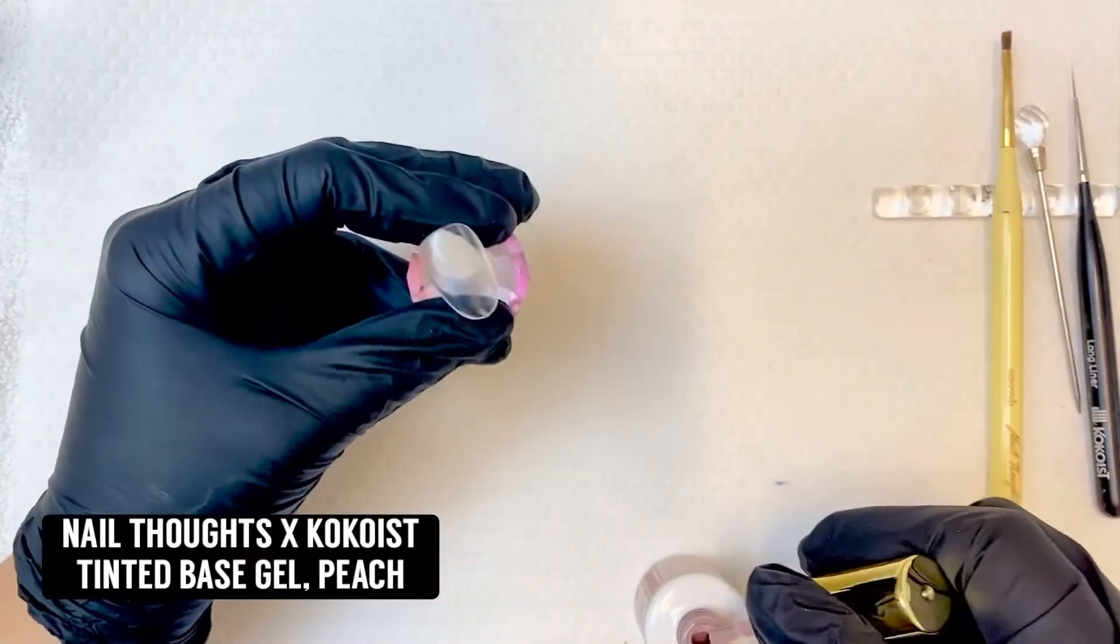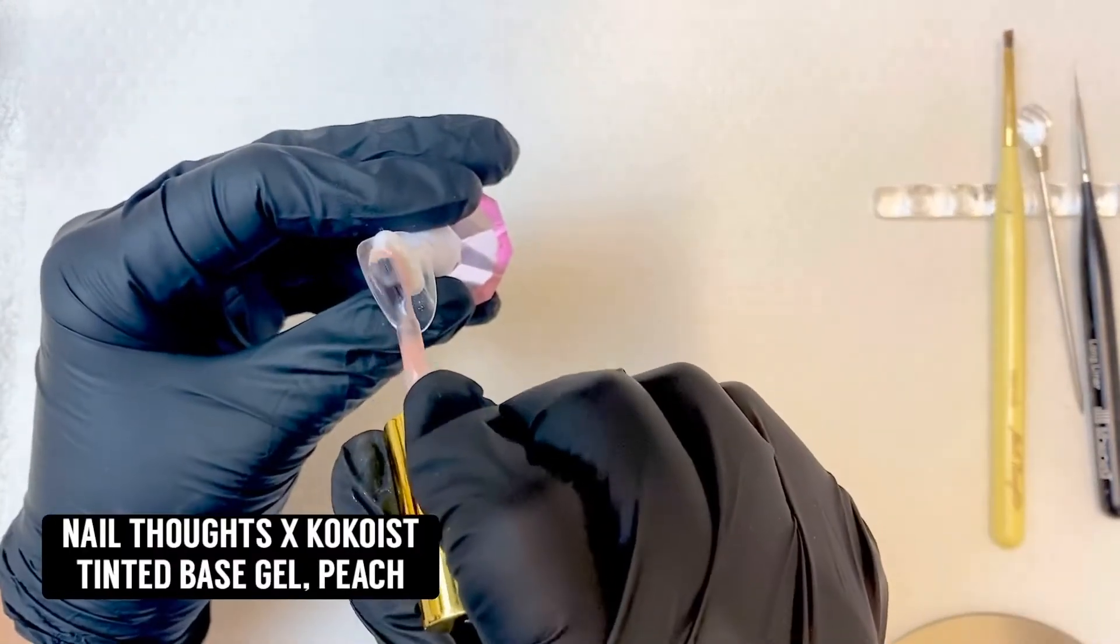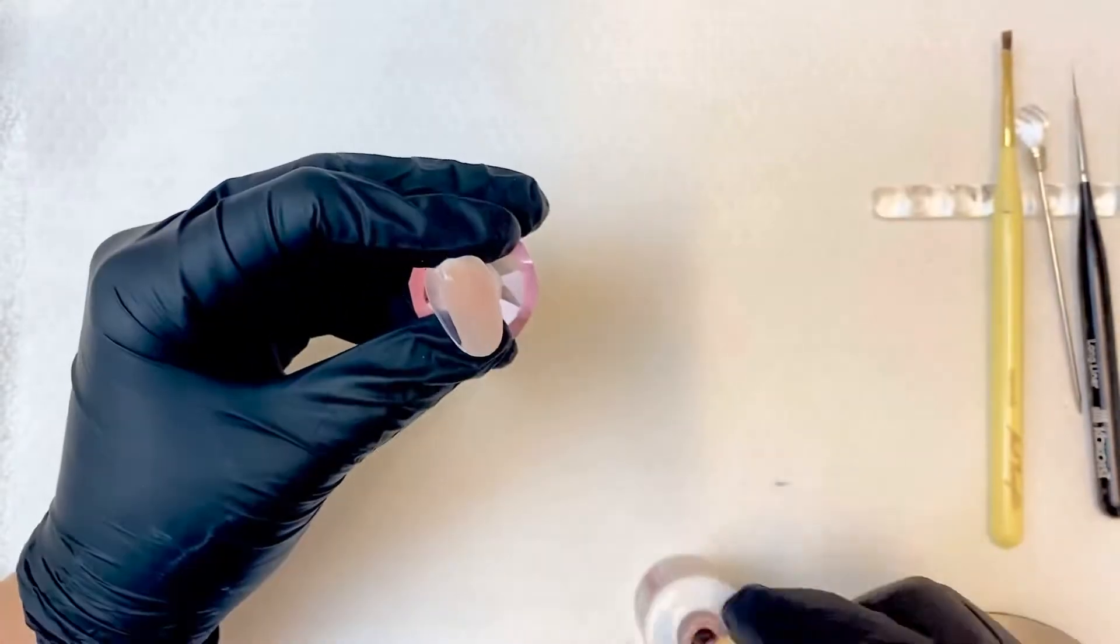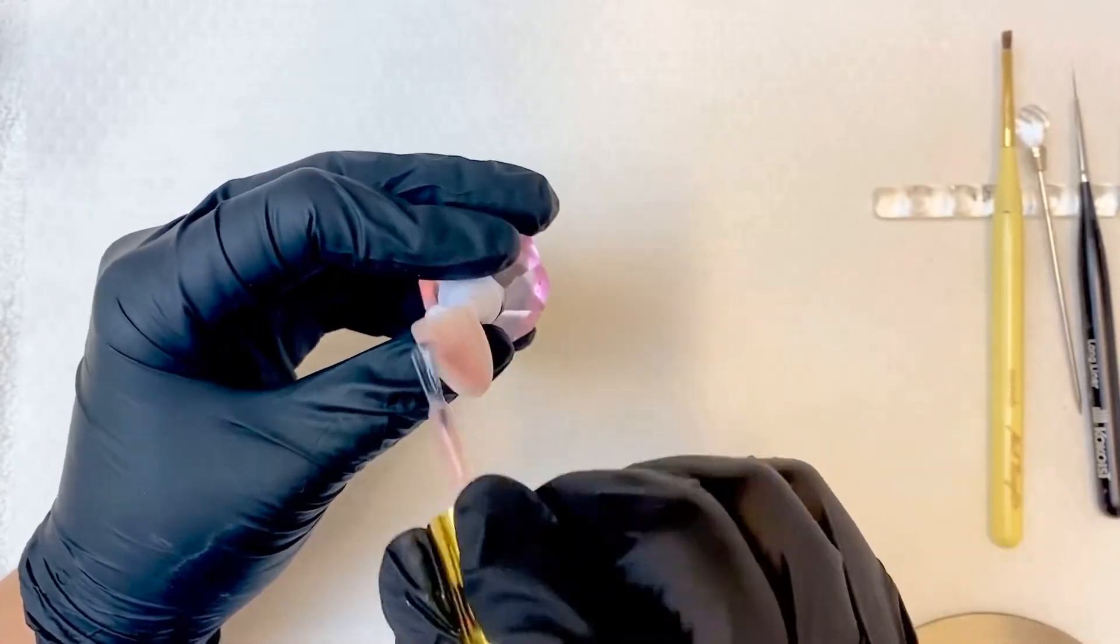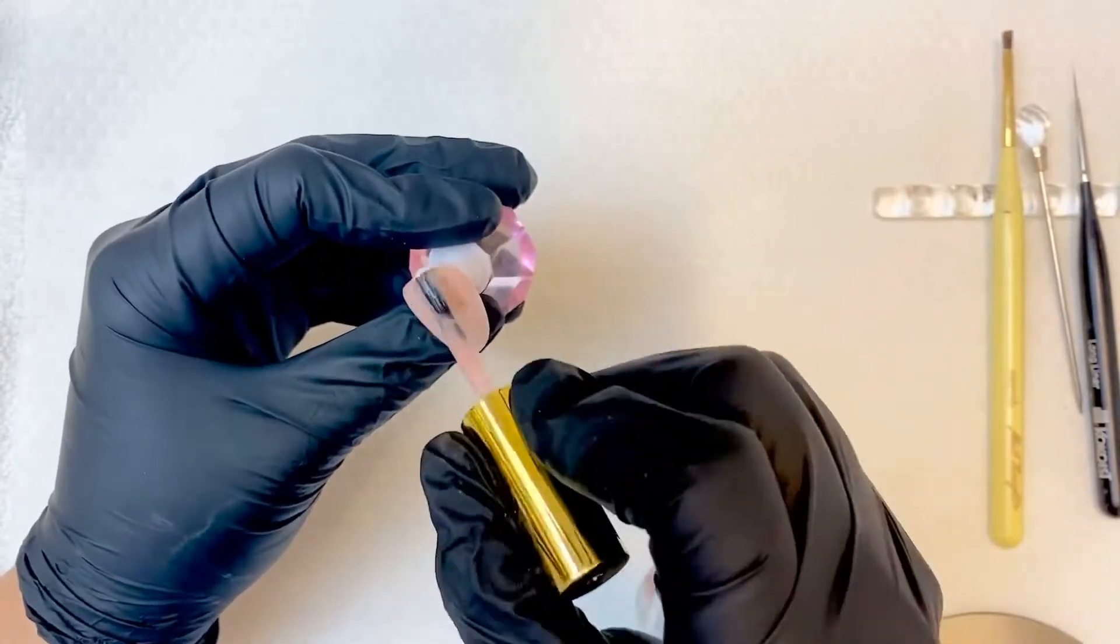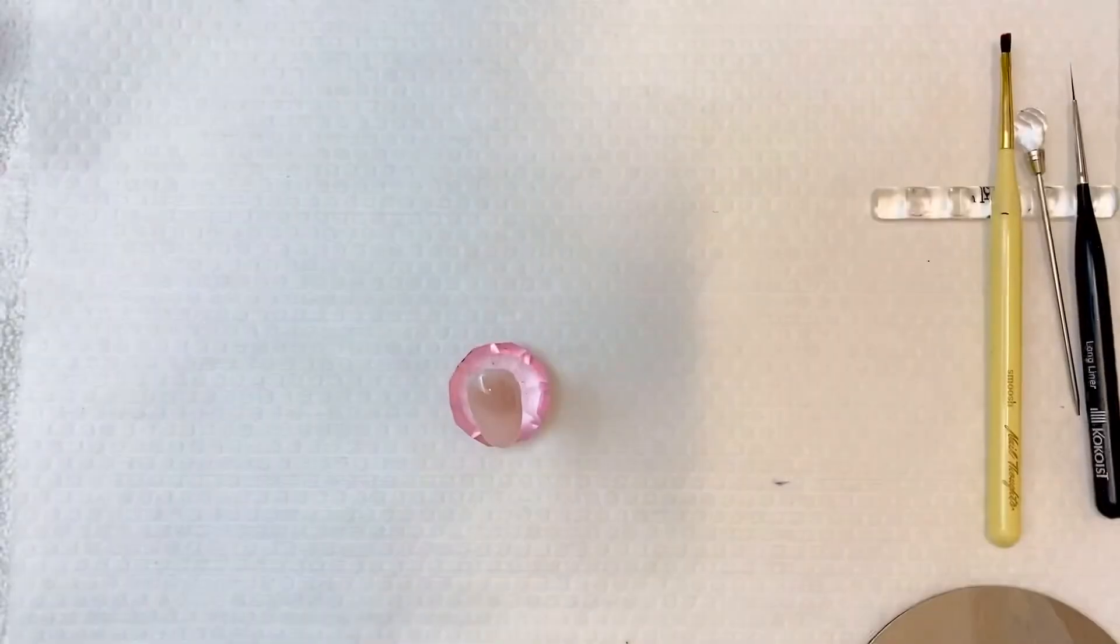We're going to start by basing out the nail with the Nail Thoughts Cocoa Tinted Base Gel in Peach. This is going to be a really nice background canvas color for us and it's your base coat. We love things that are two in one. Saves us time.